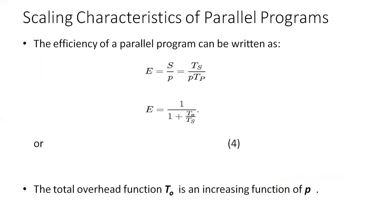Now, scaling characteristics of parallel programs. The efficiency of a parallel program can be written as E = S / P, where E is efficiency, S is speedup, and P is the number of processing elements. This gives efficiency equal to TS / (P × TP). Using the expression for parallel overhead, we can rewrite this expression as E = 1 / (1 + T0 / TS), where by substituting the value of the parallel overhead, the total overhead function T0 is an increasing function of P.